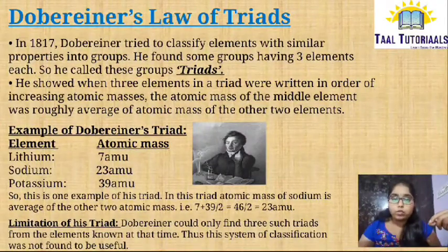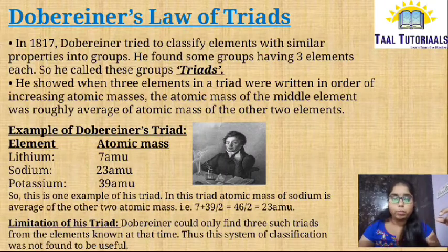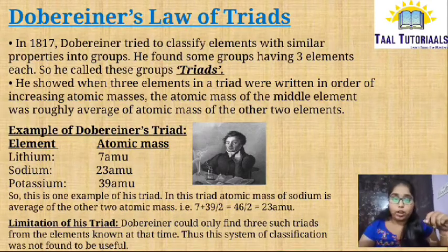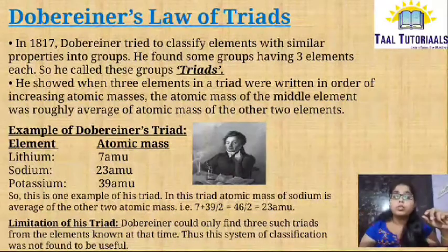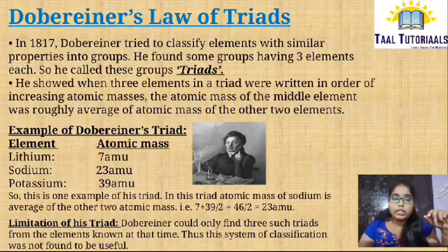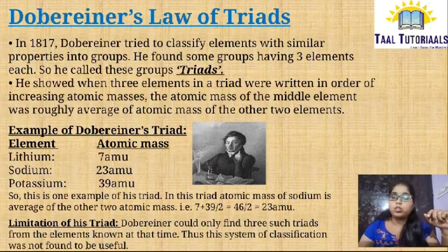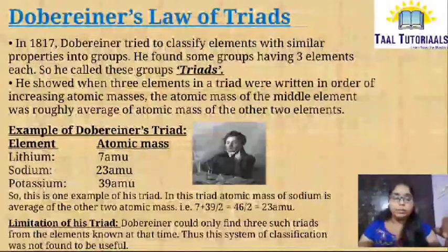The average of Lithium and Potassium is equal to Sodium — this was successful at that time. However, there is a limitation: Dobereiner could only find three such triads from the periodic table of that time, and this was not broadly useful.